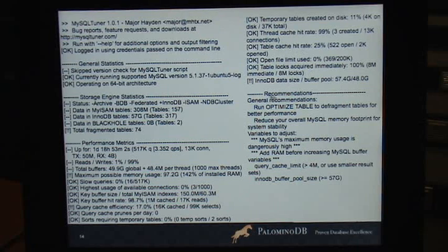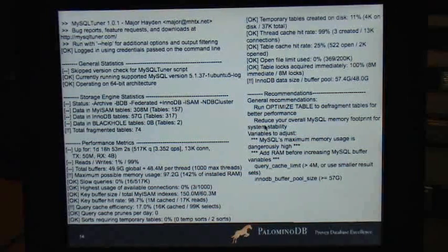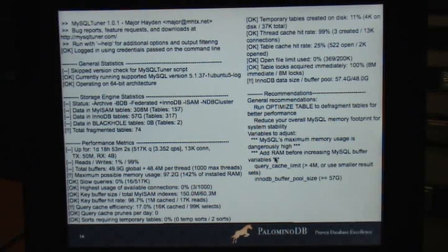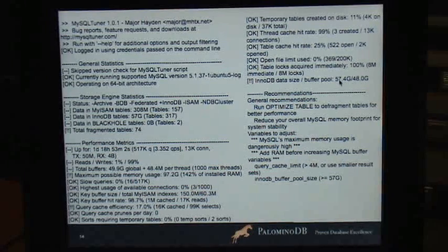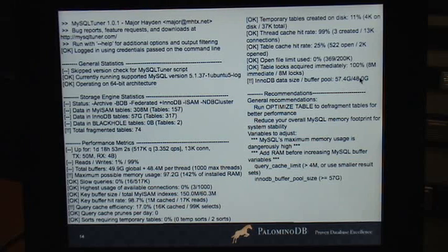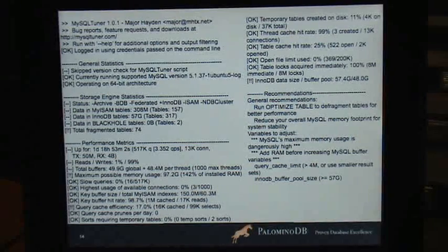So I ran this with --recommend. So basically, run optimize tables to defragment, reduce the footprint for system stability—that's this 142%. So it's saying reduce the amount of memory MySQL uses. So yeah, MySQL's maximum memory usage is dangerously high, add RAM before increasing other variables, but by the way, I think you should increase query_cache_limit and increase your InnoDB buffer pool size to greater than 57 gigs, which, the InnoDB buffer pool was—the size of the data was 57 gigs, but the buffer pool was 48 gigs. That's a very big buffer pool. And yet it's saying, well, but the InnoDB data is bigger than that, so you want that all in memory. So now it's recommending that you put all your InnoDB in memory, which is a good idea if you can do it, but we're in an era now where you have hundreds of gigabytes in your tables and you're not using them all at once.